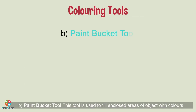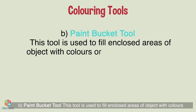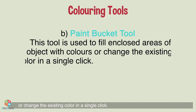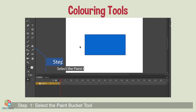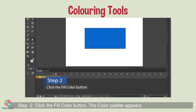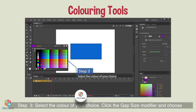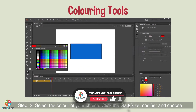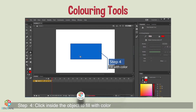Paint Bucket tool: this tool is used to fill enclosed areas of an object with colors or change the existing color in a single click. Step 1: select the paint bucket tool. Step 2: click the fill color button — the color palette appears. Step 3: select the color of your choice, click the Gap Size modifier, and choose a gap option to close any gap in the shape. Step 4: click inside the object to fill with color.